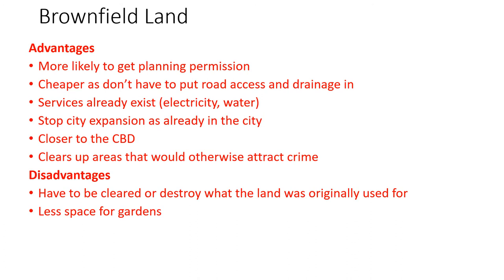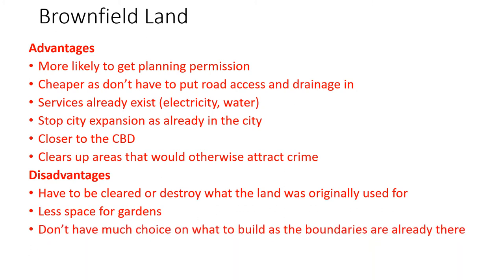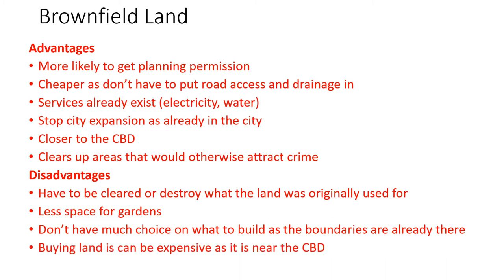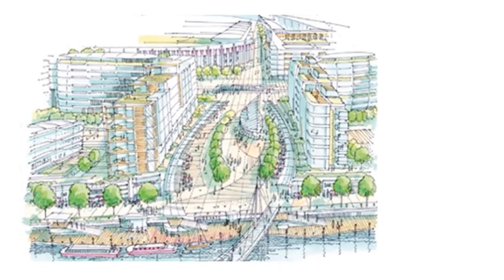Other disadvantages: there is less space for things like gardens — they can build new apartments and flats, but there will be less space because the land has already been built on before, so you're working within the existing boundaries. You also don't have much choice on what to build as the boundaries are already set. Finally, buying the land can be expensive as it's near the CBD, although planning permission is very likely and because the area is so run down, the city council would probably be selling it off fairly cheaply.